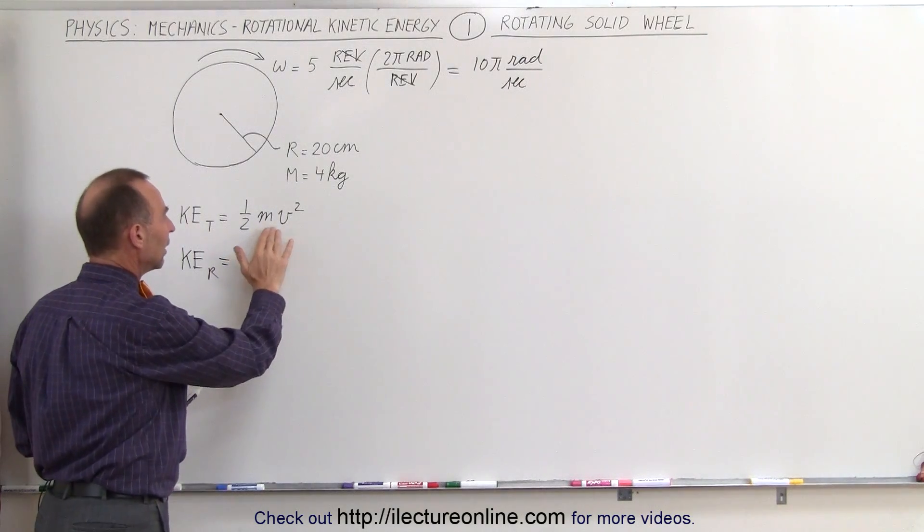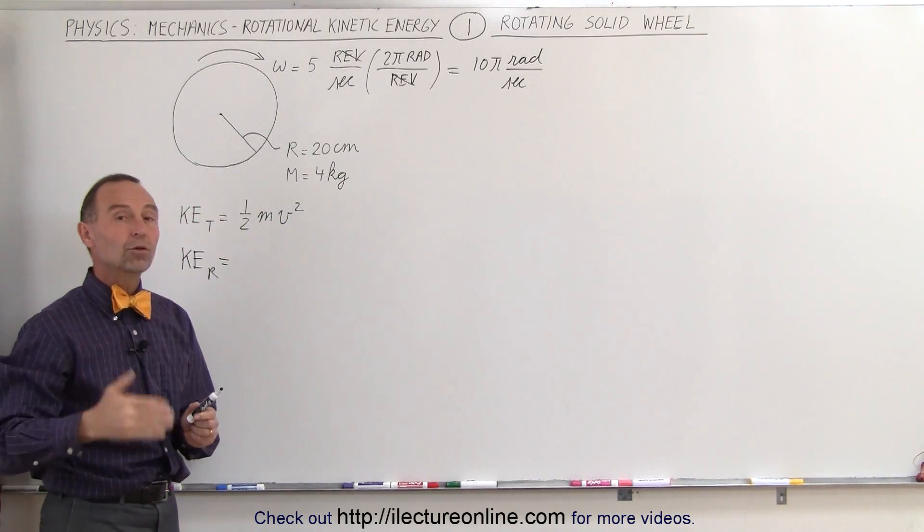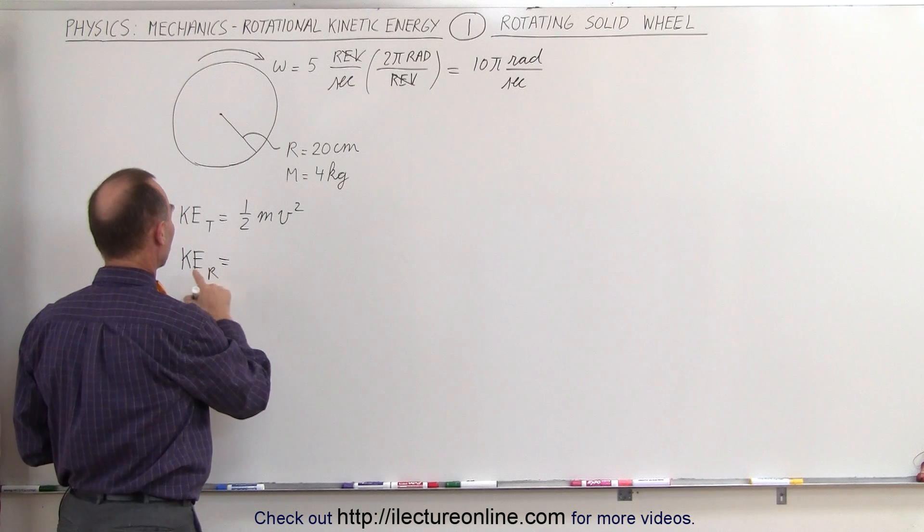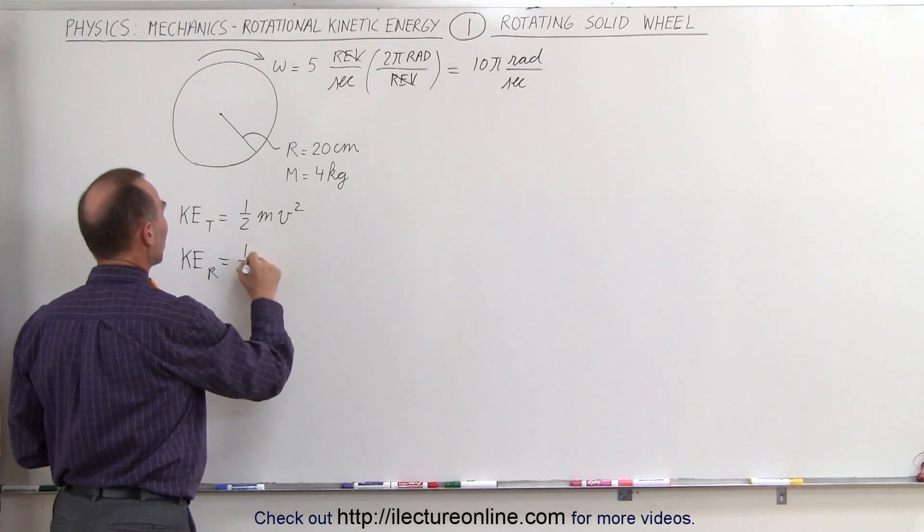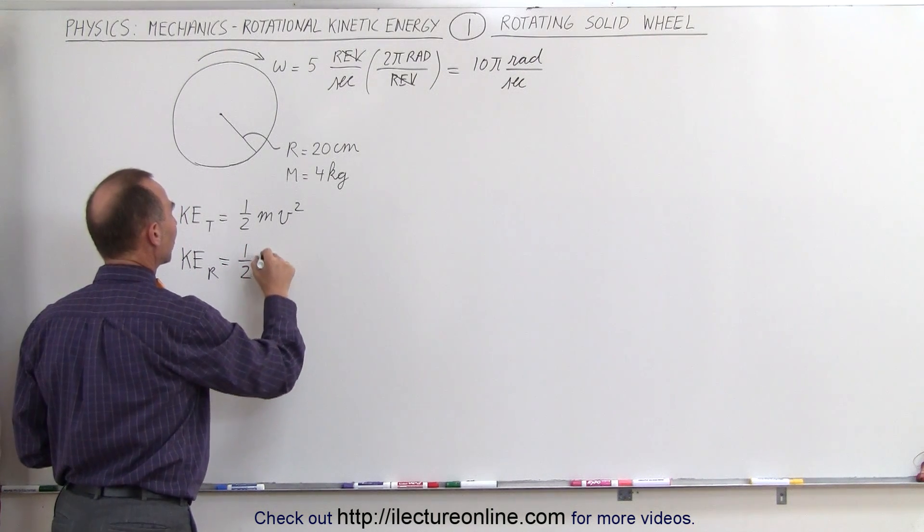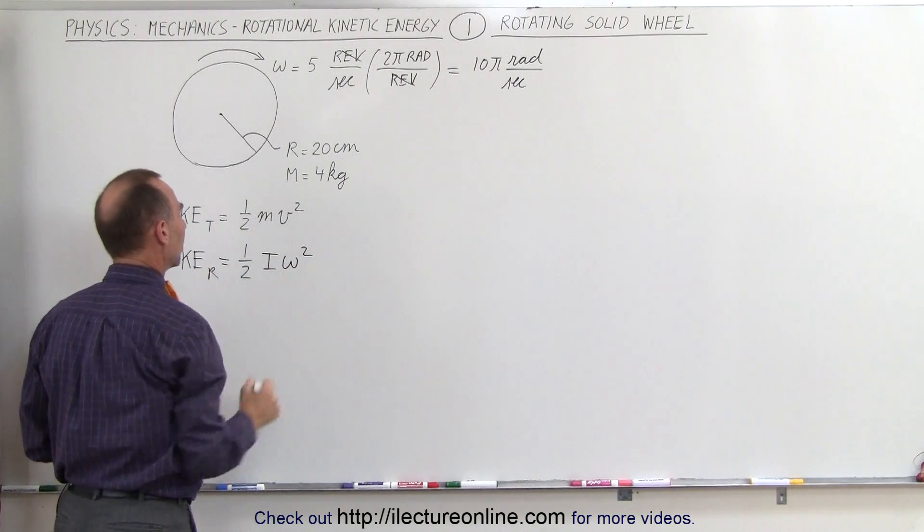So for the rotational kinetic energy, we find it to be ½ times the moment of inertia times ω². Now notice we already have the rotational angular velocity, but we don't yet have the moment of inertia.